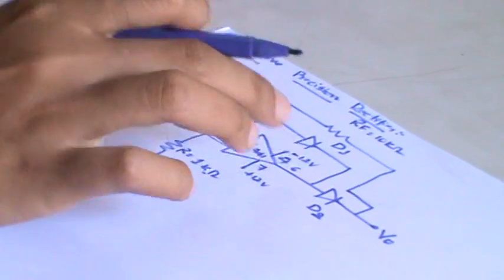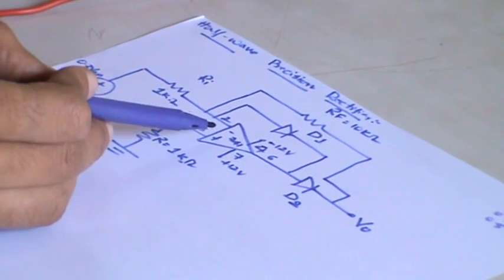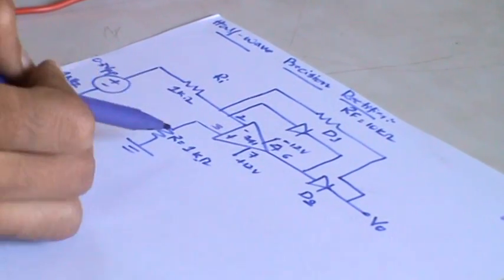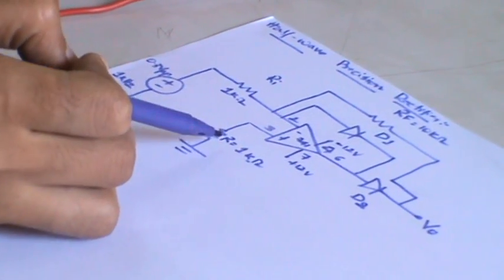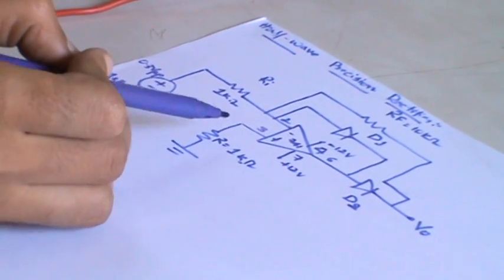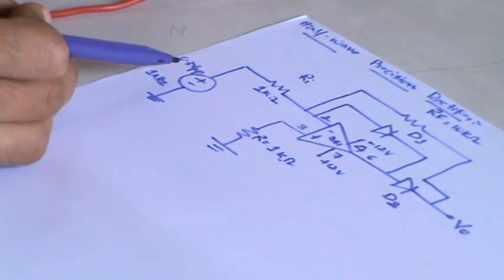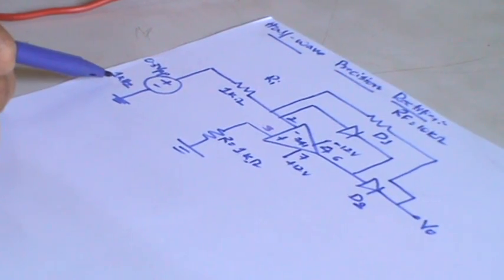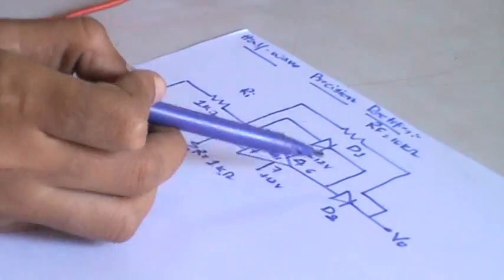In order to do this experiment, first we need an op-amp, that is an operational amplifier, and resistors. One is the feedback resistor, another is the input resistor, another which is connected to the third pin of your op-amp. Initially give the input as 0.3 volt peak to peak with a frequency of 1 kilohertz. You have two diodes, D1 and D2.